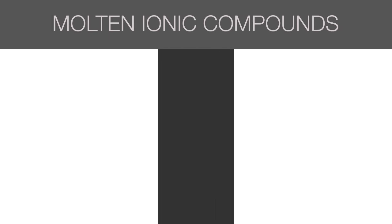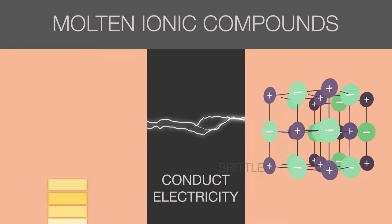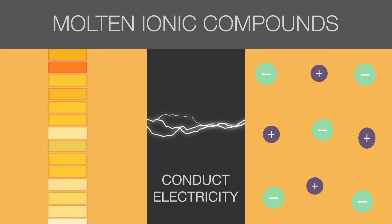Following on the same idea, molten ionic compounds can also conduct electricity. The lattice structure is broken at high temperatures, and so the ions become free-floating.